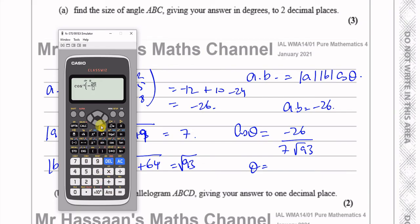26 divided by 7 times the square root of 93. Now I need to be in degree mode. I'm going to change this: shift, menu, angle unit, mode 1. That's degree mode now, the answer is going to come out in degrees.